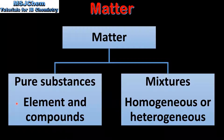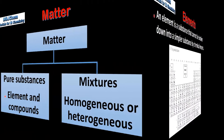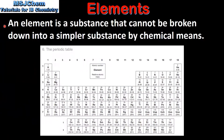We will start by looking at elements. An element is a substance that cannot be broken down into a simpler substance by chemical means. All known elements can be found on the periodic table. In the periodic table, elements are arranged in order of increasing atomic number, starting with hydrogen. The structure of the periodic table is covered in a later video.